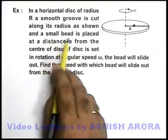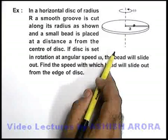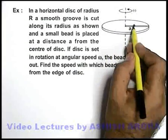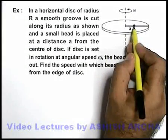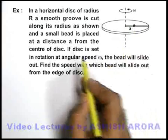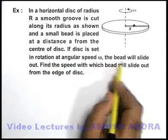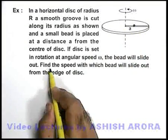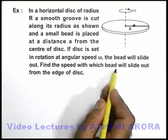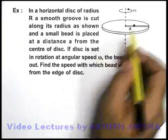A small bead is placed at a distance a from the centre of the disc. Here we can see that this is the bead, which is placed at a distance a from the centre. If disc is set in rotation at angular speed omega, the bead will slide out. We are required to find the speed with which the bead will slide out from the edge of the disc.